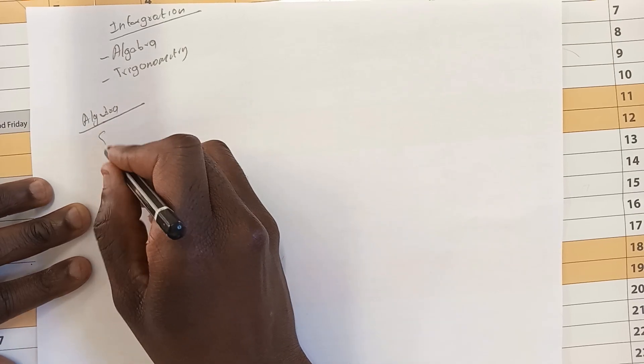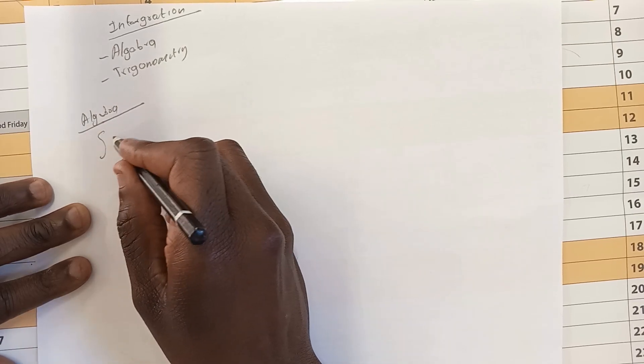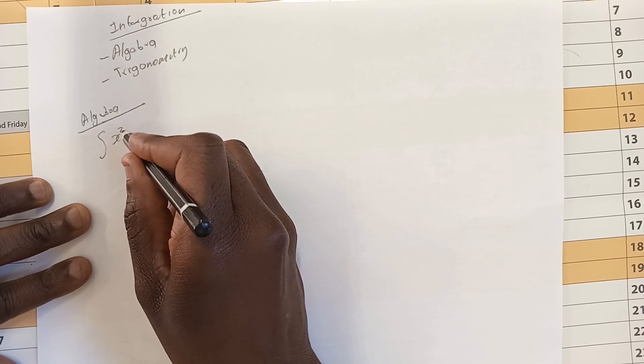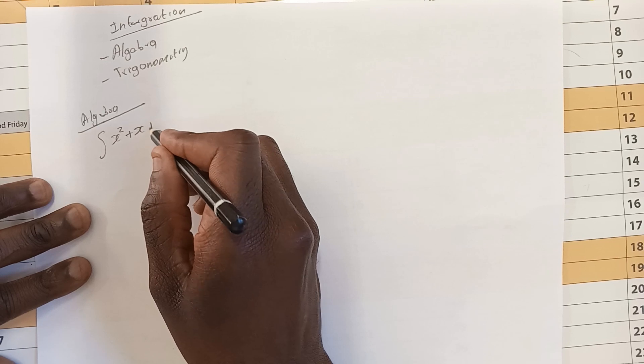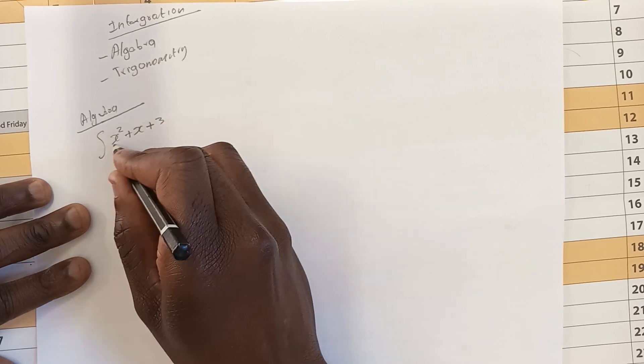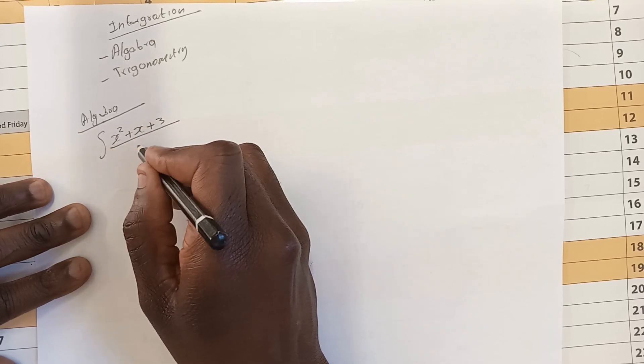You are going to see an integral sign. They say you must integrate for example x squared plus x plus 3 all over by x.